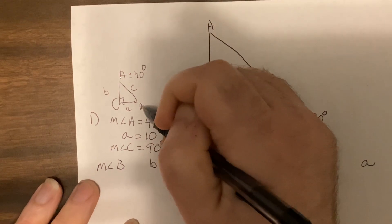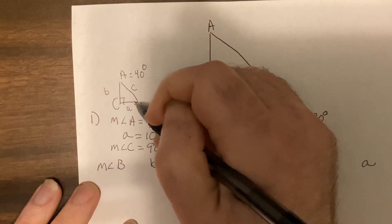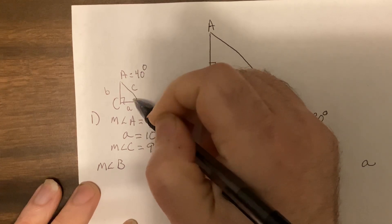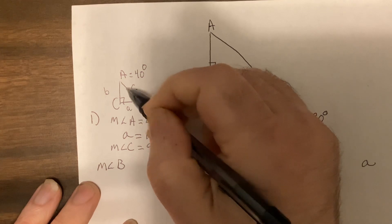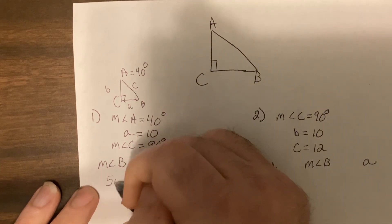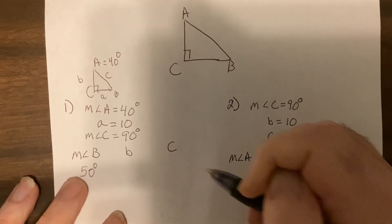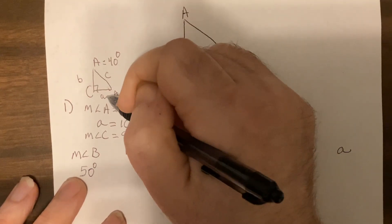I know angle B has to be 50 because these add up to 90. Remember, they're complementary. So hey, that was easy. Now I also know a is 10.